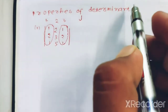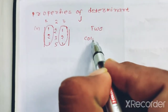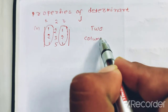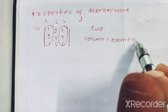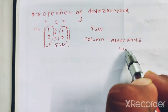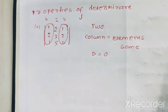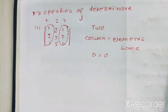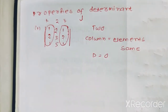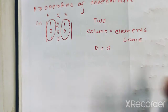If the determinant has two rows or columns whose elements are the same, then the determinant of that matrix is 0. So this is the first property and it is very easy. If we look at the determinant and two rows or columns are identical, the determinant equals 0.